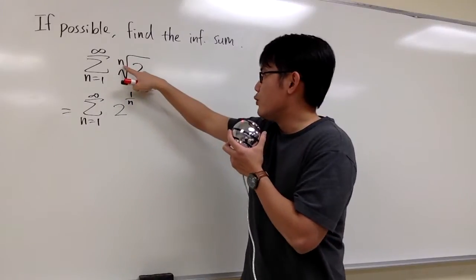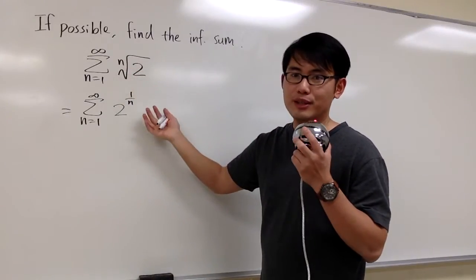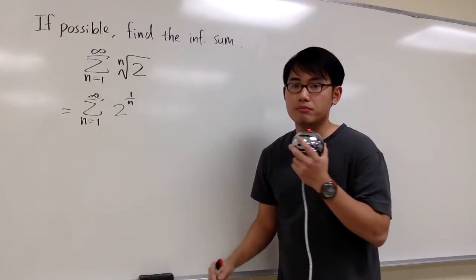Well, the reason is because, remember if we have the cube root, then that's the same as saying we have 1 over 3 power, same thing. Here we have n, that means we have 1 over n power, that's all.